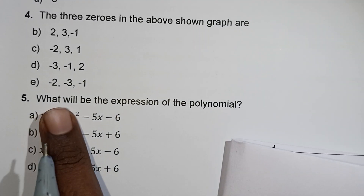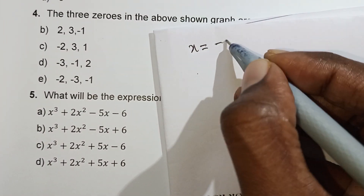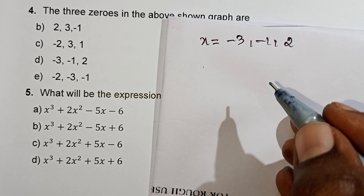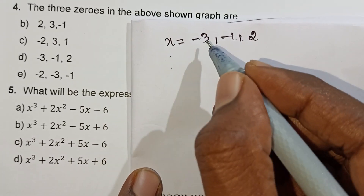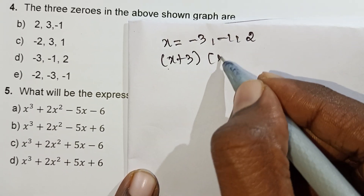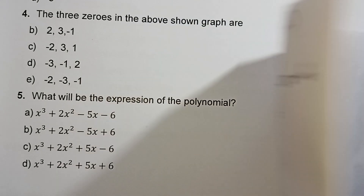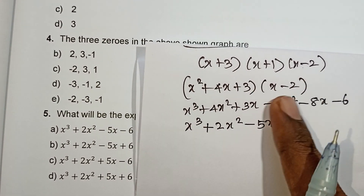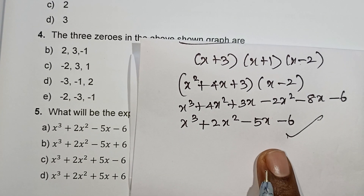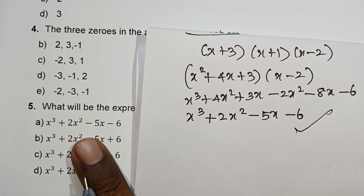Last question: what will be the expression of the polynomial? Looking at the graph with 3 zeros — x equals minus 3, minus 1, and plus 2. The factors are (x plus 3), (x plus 1), and (x minus 2). You can multiply these three factors easily to get the polynomial. Using the product of the zeros, the first option is correct.